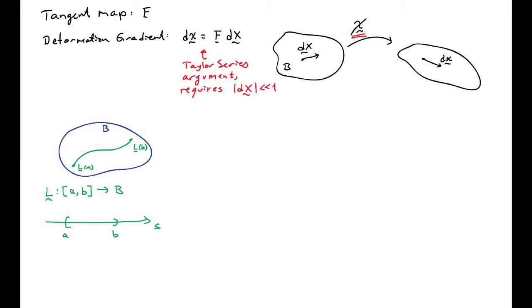A curve is simply a mapping from R1 onto the body B. We pick some interval A to B and parameterize that interval by S. As S goes from A to B, L capital traces out a curve in the reference body.